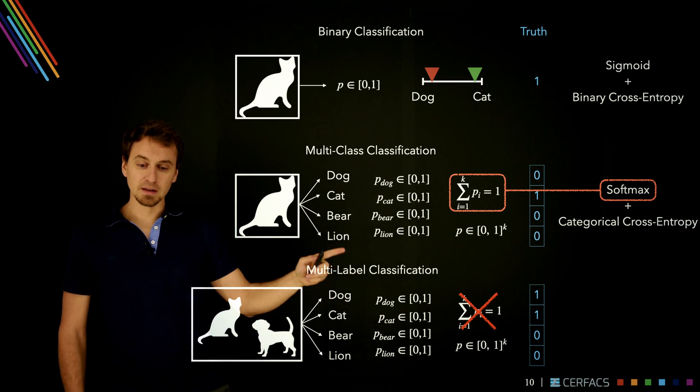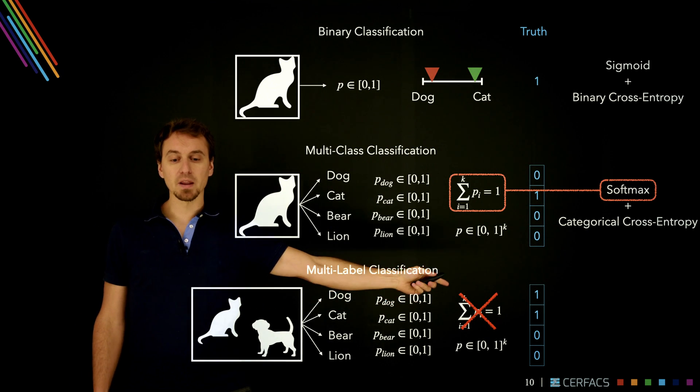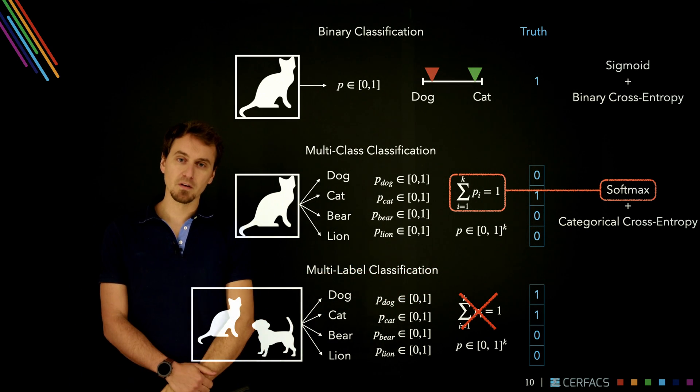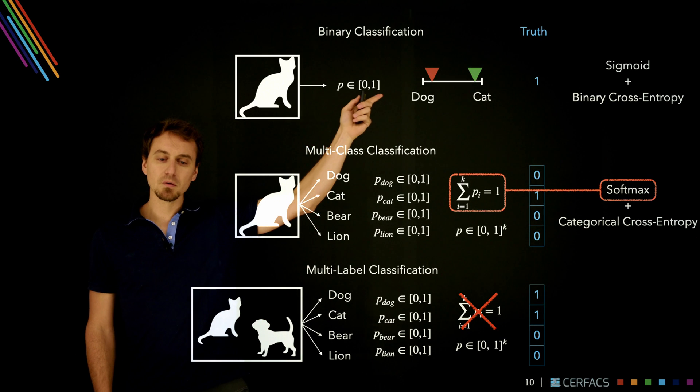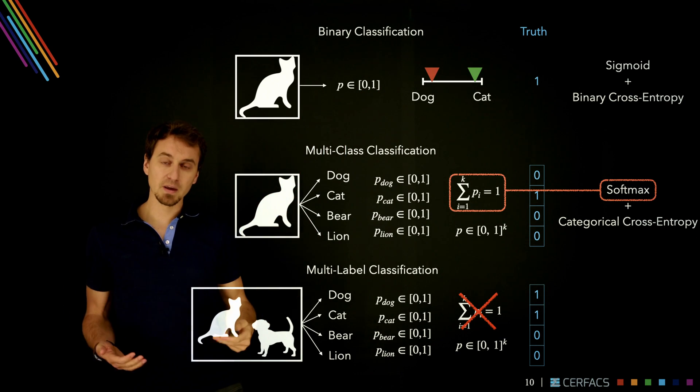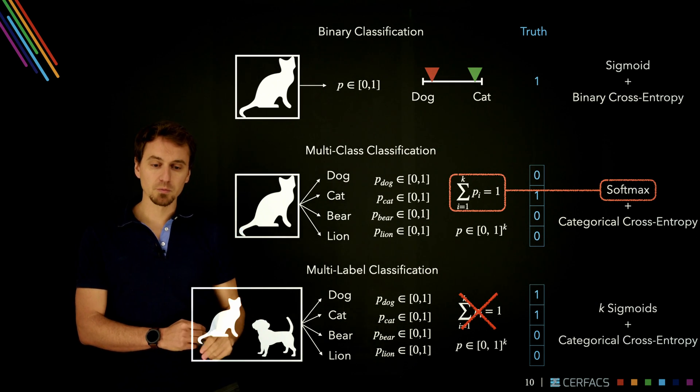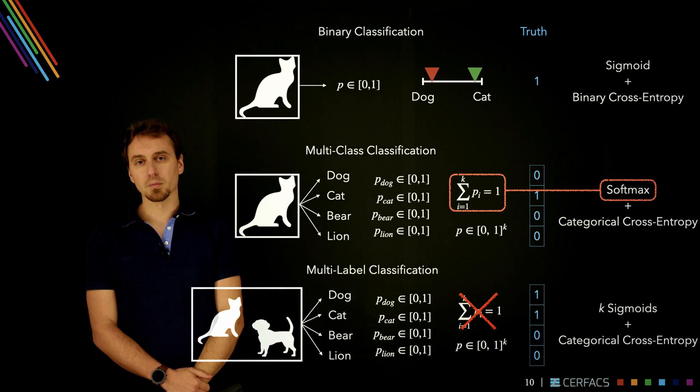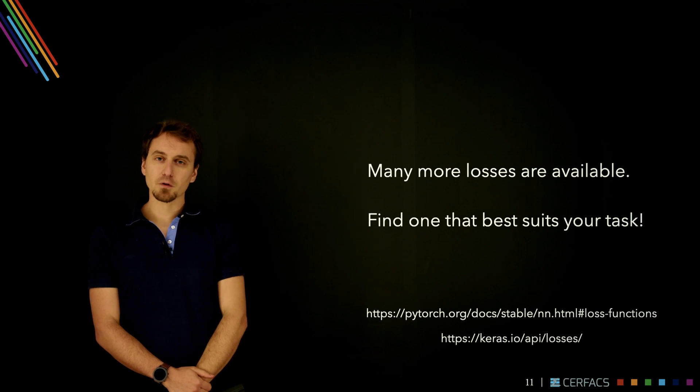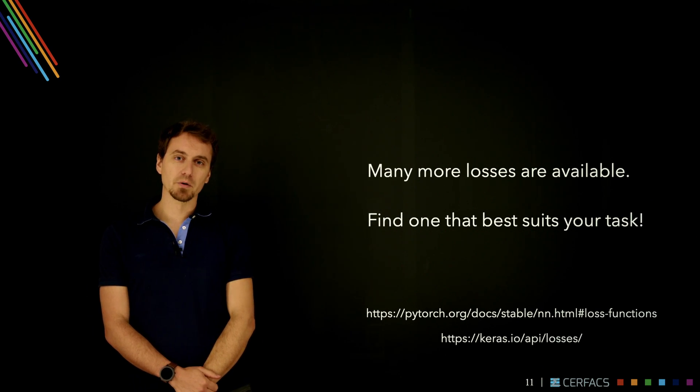And finally, for multi-label classification, it's very similar, except because we're relaxing this constraint, we no longer need a softmax. We can't really use a single sigmoid either because we want k outputs. So what we do is we use k sigmoids, one for each possible output, and a categorical cross-entropy. That's it for the basics on categorical loss functions.